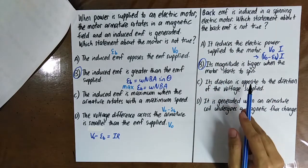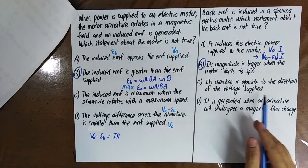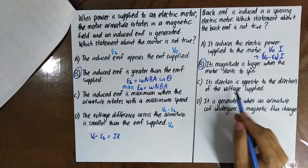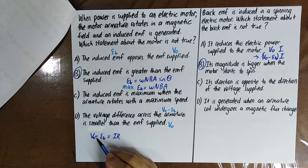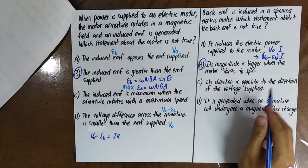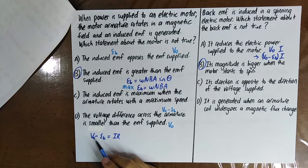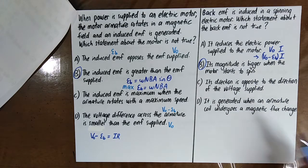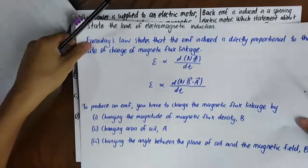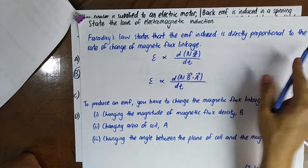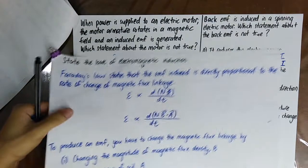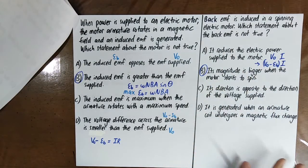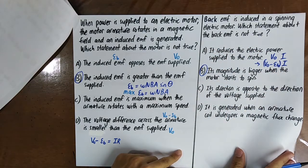'The direction of the back EMF is opposite to the direction of voltage supply' — True. That's why we write V₀ − EB = IR, not V₀ + EB. 'It is generated when an armature coil undergoes a magnetic flux change' — True. From Faraday's law, the induced EMF is directly proportional to the rate of change of magnetic flux linkage. This induced EMF is called back EMF.